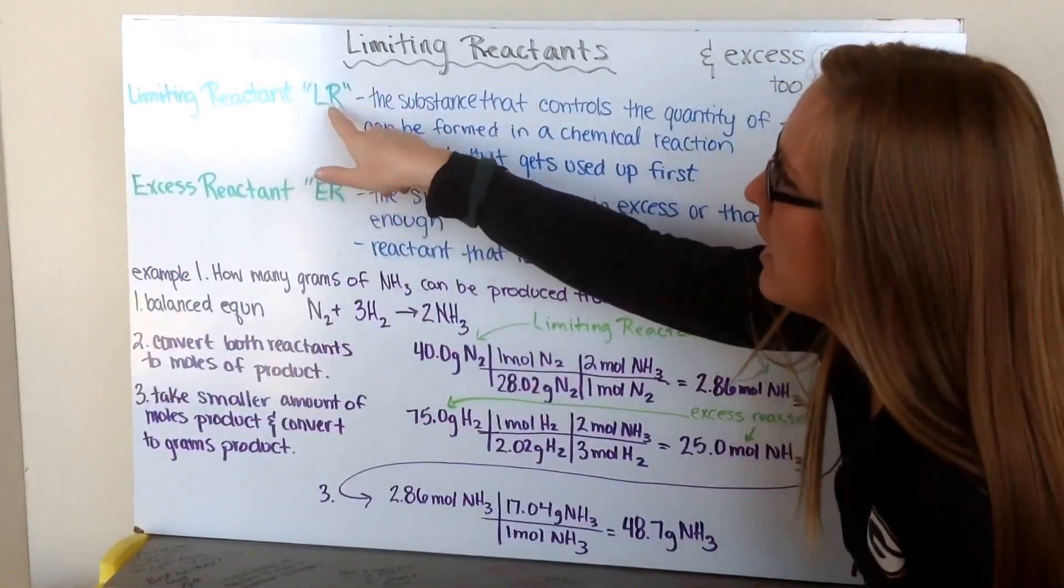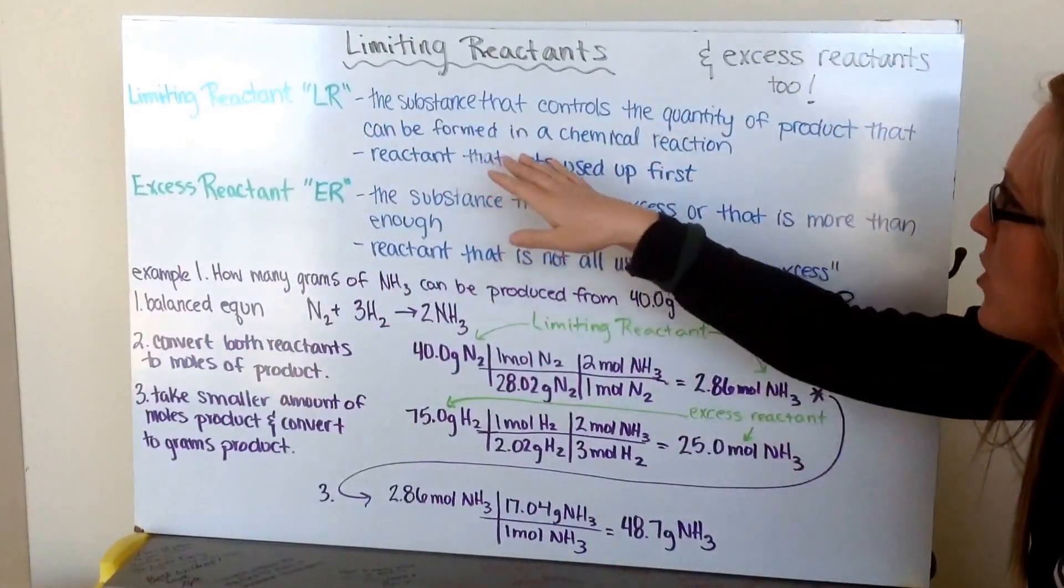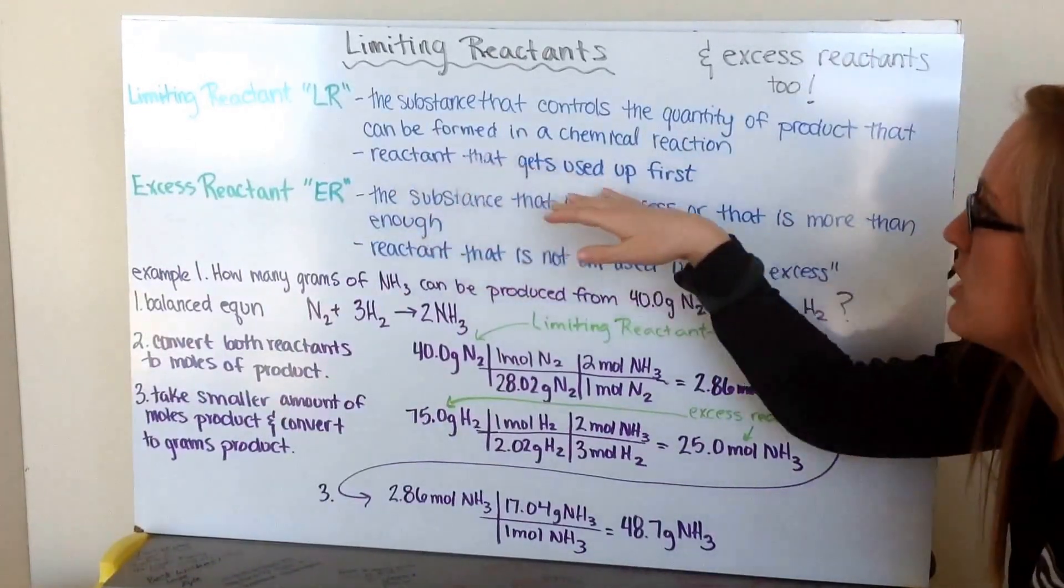Well, it's abbreviated as capital LR, and it's the substance that controls the quantity of product that can be formed in a chemical reaction. This is the reactant that gets used up first.